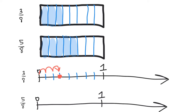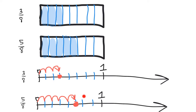Then 5/8 is basically the same process. I'm going to cut it into 8 equal-sized pieces, and then 5/8 says move over 5 of those pieces. There's 5/8 and there's 3/8. I can see that 5/8 is longer than 3/8 — that's how you use an area model or a number line to compare two fractions.